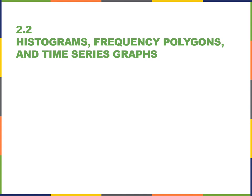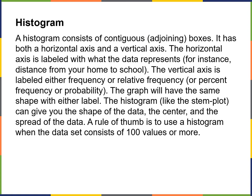Now let's talk about histograms, frequency polygons, and time series graphs. A histogram consists of contiguous or adjoining boxes. It has both a horizontal axis and a vertical axis. The horizontal axis is labeled with what the data represents — for instance, distance from your home to school. The vertical axis is labeled either frequency, relative frequency, percent of frequency, or probability.